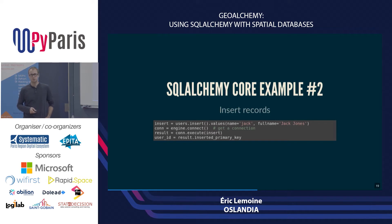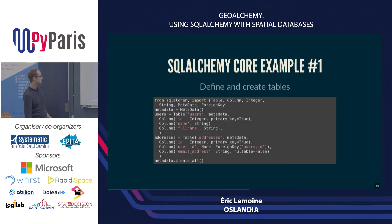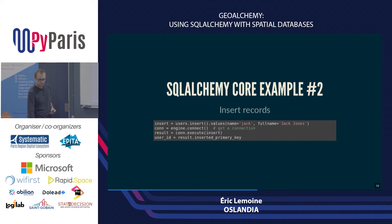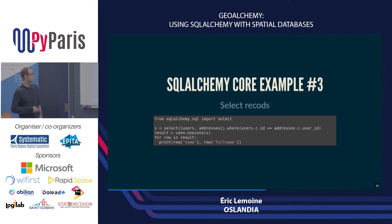Another example showing how to insert data. Here, users is the table object I just created. I can use that table object and call insert to get an insert expression. Then I call values on this expression to give the values to be inserted, and I use the engine to get a connection and execute my insert query. For selection, you use a select function to create a select object — here I create one using the users and addresses tables, and then use a where condition to specify the join condition between the two tables. Very close to what you see in SQL.